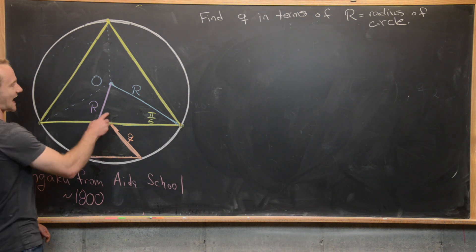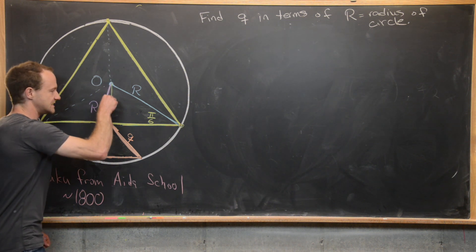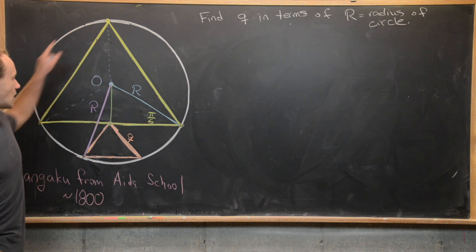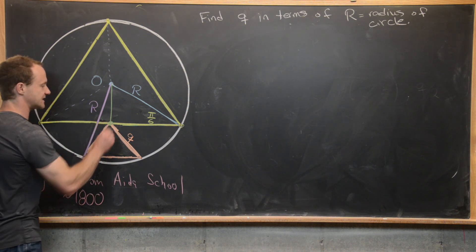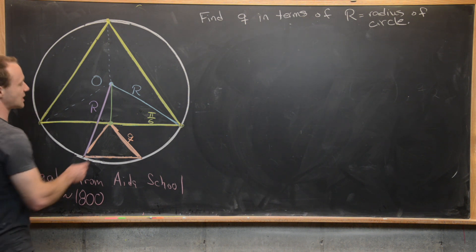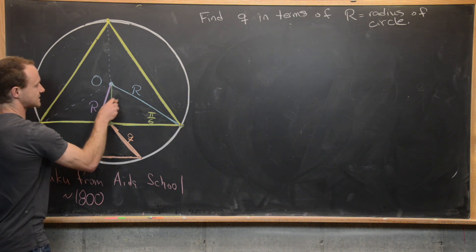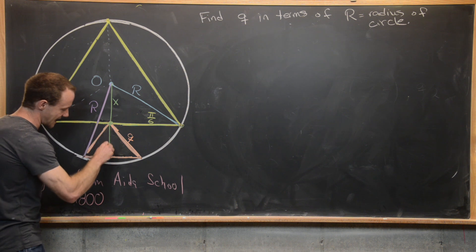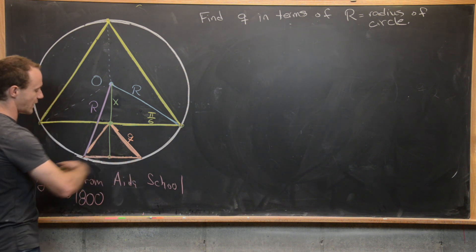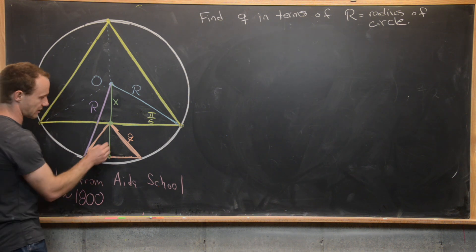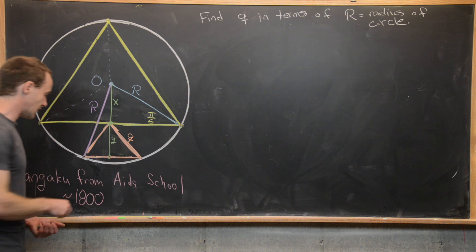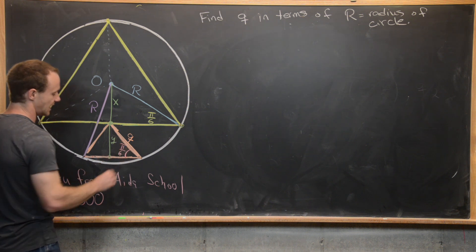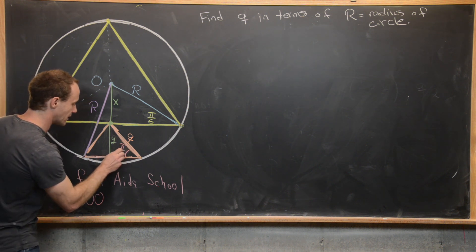Now I add a line segment from the origin O down to the midpoint of the larger equilateral triangle's side, which is also the vertex of the smaller equilateral triangle. I'll call this length x. I also extend this line down to the midpoint of the base of the smaller equilateral triangle, calling that additional length y. The angle at the vertex of the smaller equilateral triangle is pi over 3.